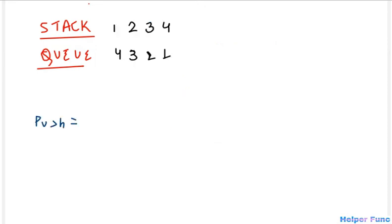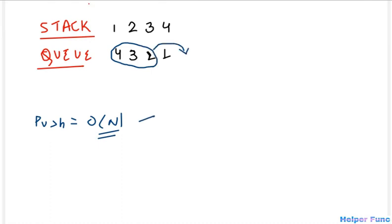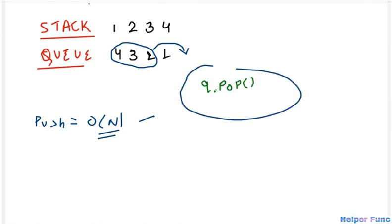The push operation here requires O(n) time, because every time we push an element into the queue we have to remove all the previous elements and insert them back. The pop operation requires O(1) time because we simply call queue.pop.